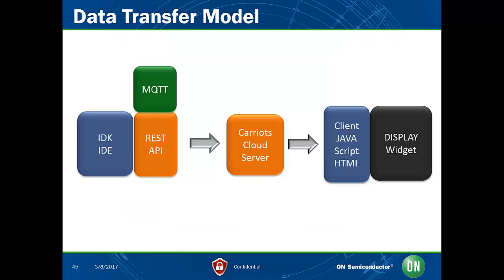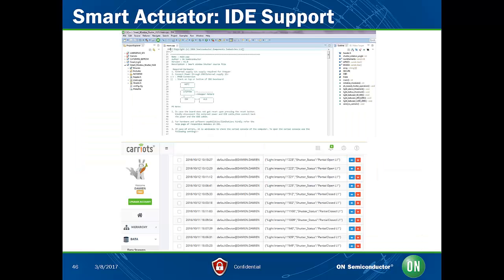This is how the data is transferred from the On Semiconductor IDK, representing the IoT device or object, to the cloud software platform, essentially using the REST API and MQTT protocol. The information is then processed and managed via JavaScript HTML for display on a PC. Here we depict the integrated development environment, IDE, software applications code, and the help file. At the bottom, you can see the light intensity, shutter status, and the position of the shutter data, which is all transmitted to the cloud in a raw format.